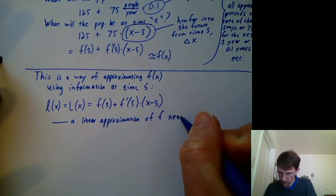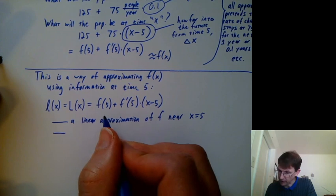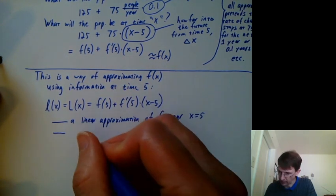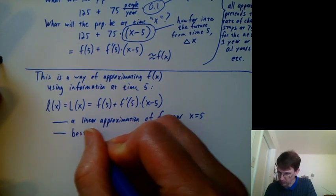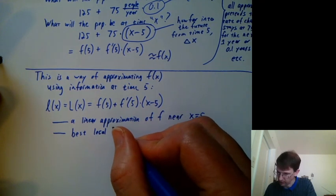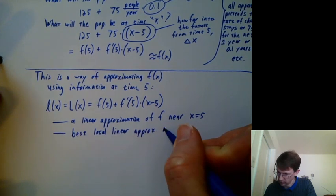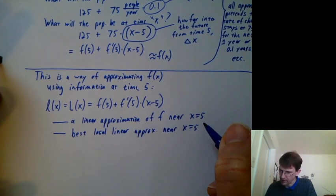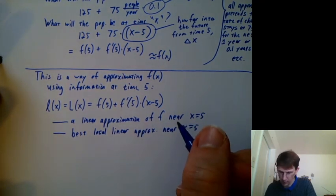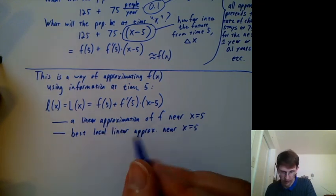So this is a linear approximation of f near x equals 5. It's actually the best possible linear approximation as long as you only care about values right near x equals 5. So we could say it's our best local, local meaning right near time 5, best local linear approximation near x equals 5. Our idea is, would you rather play with linear functions or nonlinear ones? Well, linear ones sure are easy compared to nonlinear ones. So it's nice to have linear versions, approximations, of nonlinear functions.